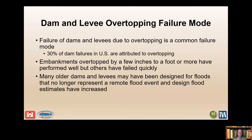Failure of dams and levees due to overtopping is a common failure mode. Over 30% of dams that failed in the U.S. are attributed to overtopping. We'll discuss key factors such as overtopping depth, duration, and dam crest materials. Earthen embankments may be particularly vulnerable. We'll show some case histories next to illustrate the concepts.